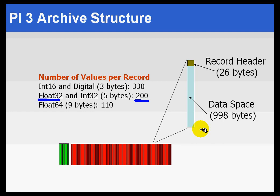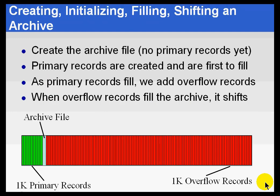Sometimes people ask how much data they can store in their archives. You now have the ability to calculate that — just look at what you're storing, how much space you have per 1K record, and do the calculation. There are times when looking at your archives you'll see information about primary records and overflow records.